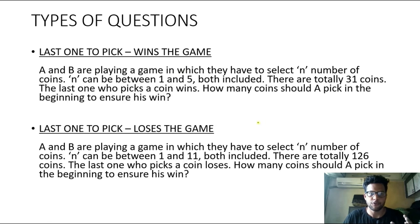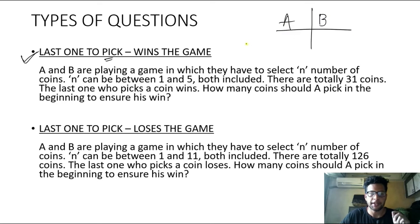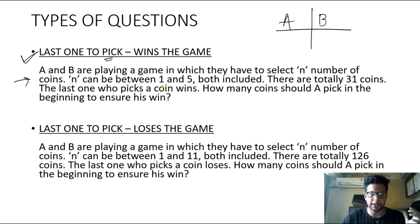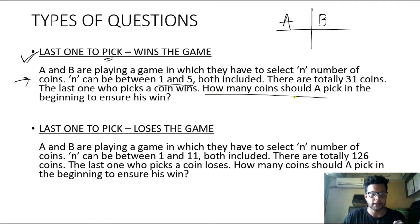Let's understand what types of questions you can expect from this concept. The first concept is: last one to pick wins the game. A and B are playing a game in which they have to select n number of coins, where n can be anywhere between 1 and 5, both inclusive. There are total 31 coins. The last one who picks a coin wins the game. How many coins should A pick in the beginning to ensure his win?